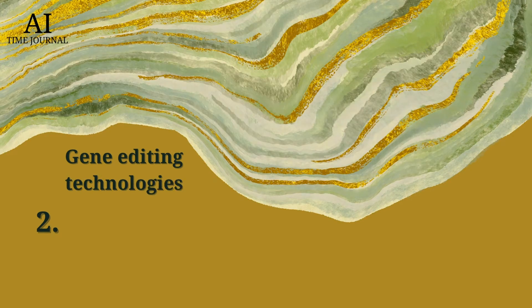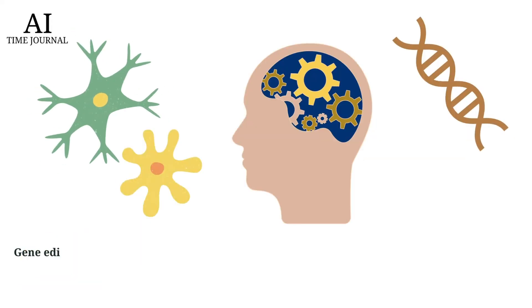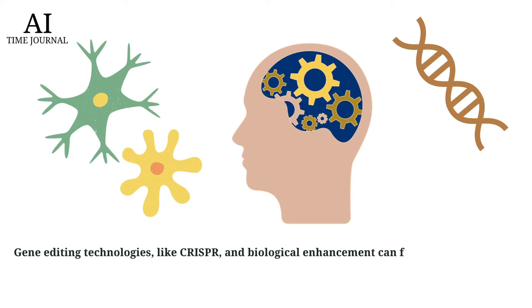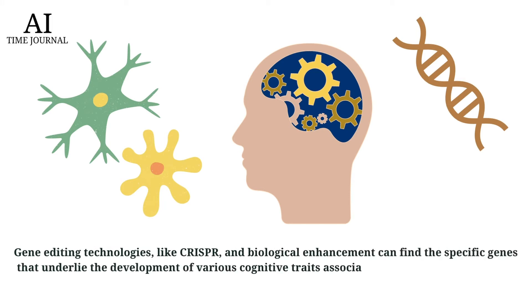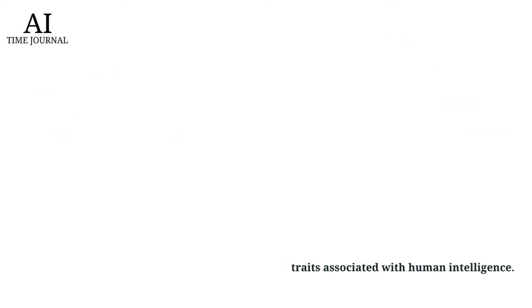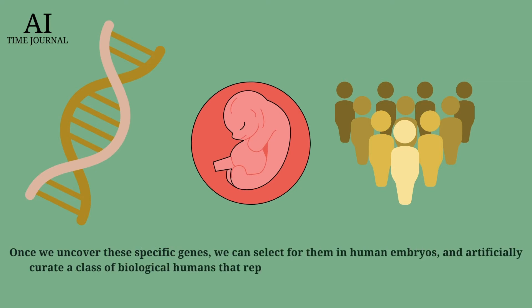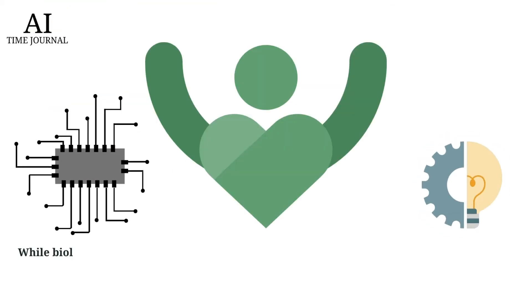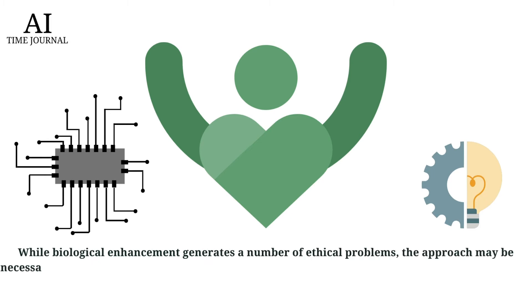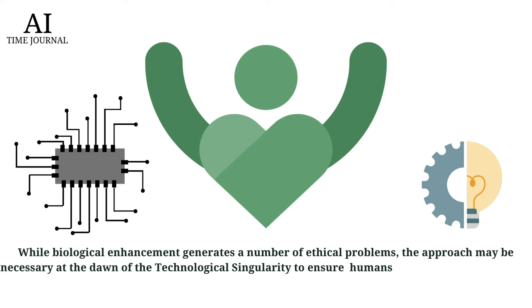Path 2: Gene Editing Technologies. Gene editing technologies, like CRISPR and biological enhancement, can find specific genes that underlie the development of various cognitive traits associated with human intelligence. Once we uncover these specific genes, we can select them in human embryos and artificially curate a class of biological humans that represent the intellectual pinnacle of humanity. While biological enhancement generates a number of ethical problems, this approach may be necessary at the dawn of the technological singularity to ensure that humans keep up with innovation.